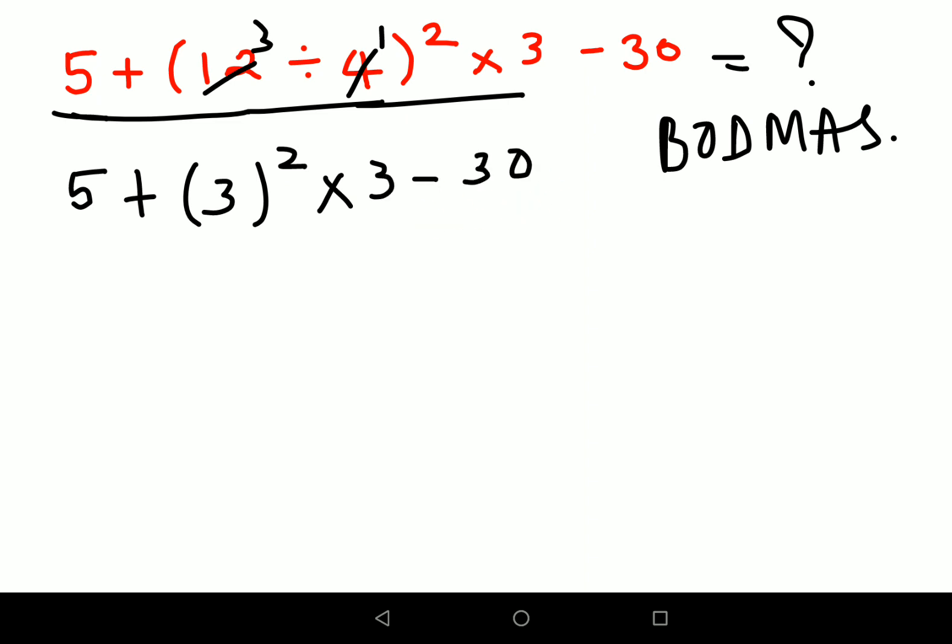The next thing we should do is the order, means the index. So we have 5 plus 3 square is 9 into 3 minus 30.